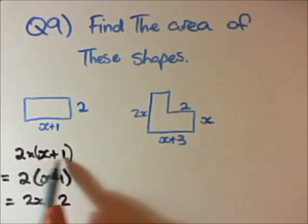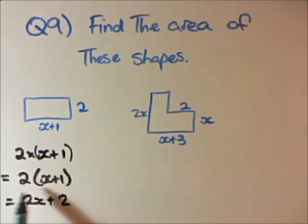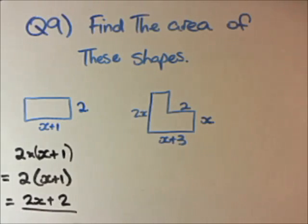Once we have it in this form, or we can get rid of the little time sign, which is this form, we can expand it to get our final answer. So that is the area, an algebraic way of writing it, of the first rectangle.